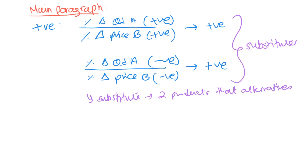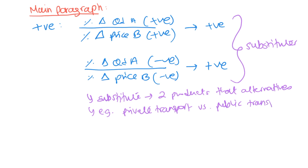You could show this on a diagram and also give an example. Substitutes are two products that are alternatives to each other. For example, private transport versus public transport — because you can't take both at the same time, these two things are substitutes to each other.